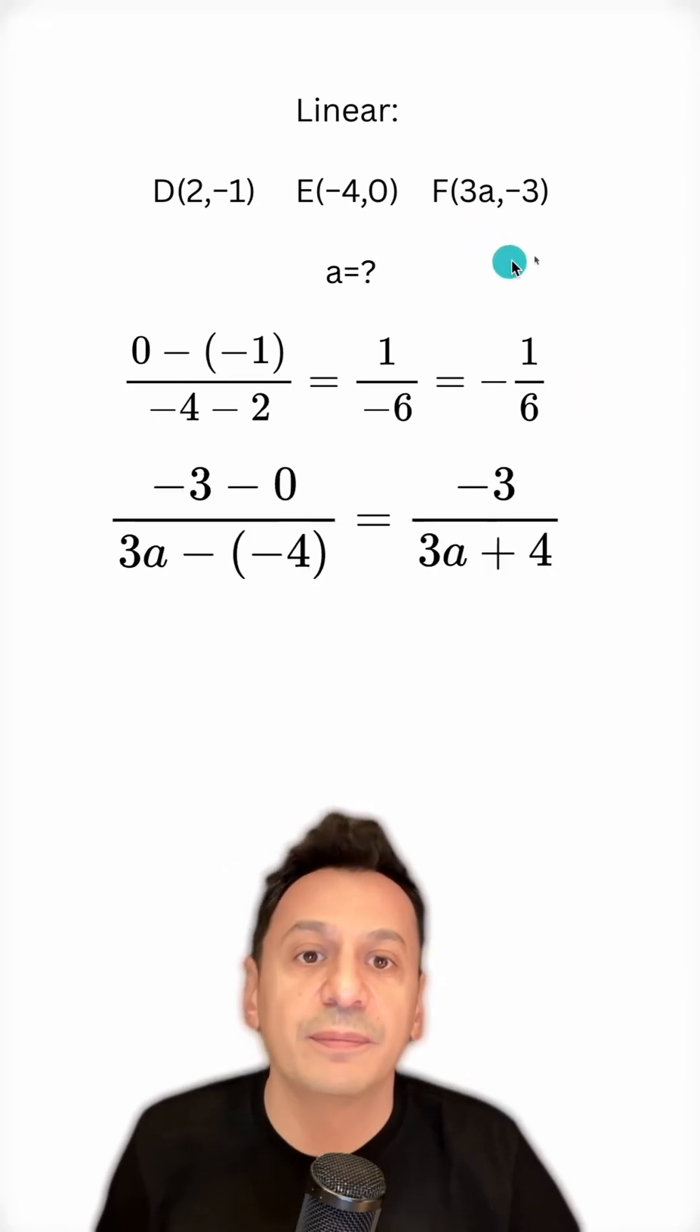Again, in the same way, I divide the difference of the ordinates by the difference of the abscissas and find the slope of the segment FE. Now let's go ahead and set these two equal to each other.